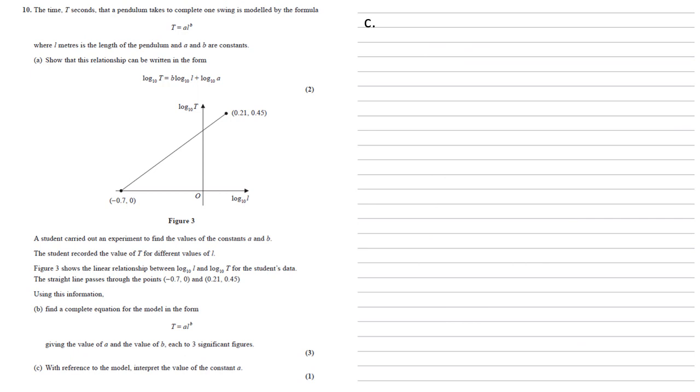So part c, with reference to the model, we need to interpret the value of the constant a. So if we look at the formula t equals a times l to the b, if l were to equal 1, then it wouldn't matter what b was because 1 to the power of any other number is still going to stay 1.